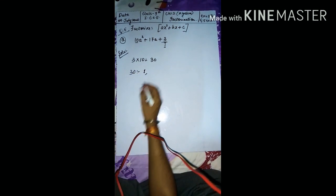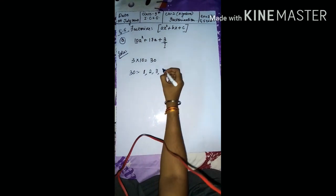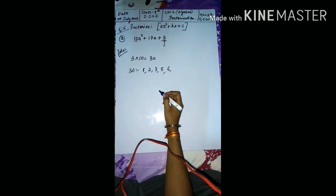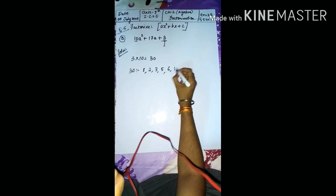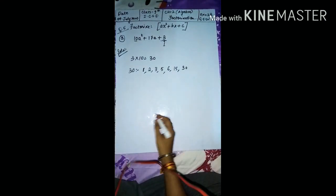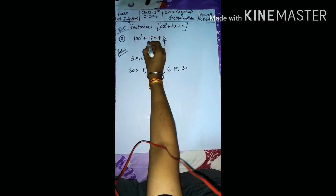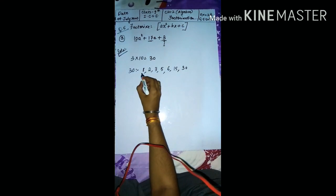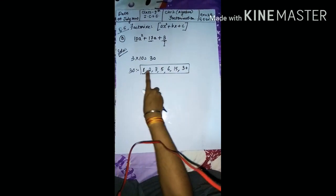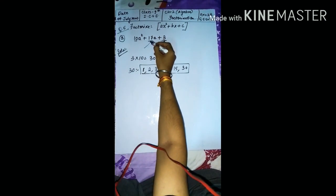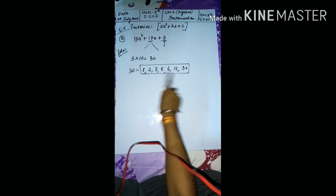What are the factors of 30? 1, 2, 3, 5, 6, 15, and 30 itself. These are the factors of 30, which came from multiplying 3 by 10. Now you have to split 17 using two of these factors. By taking 15 and 2, since 15 + 2 = 17, we break 17 into 15 and 2.